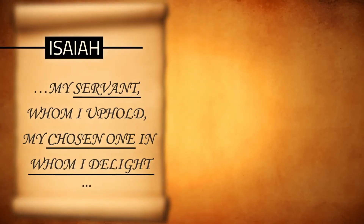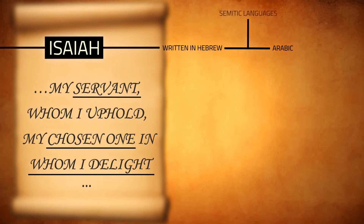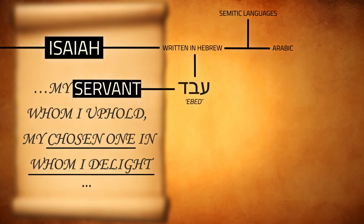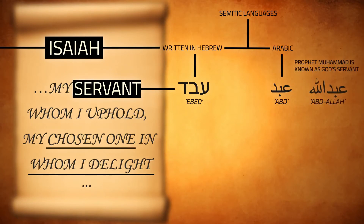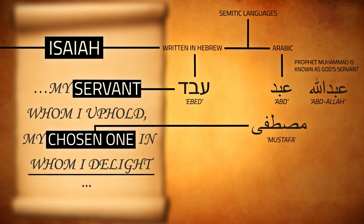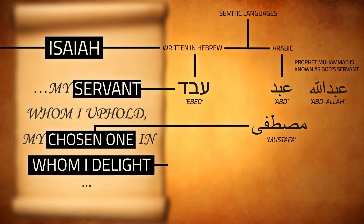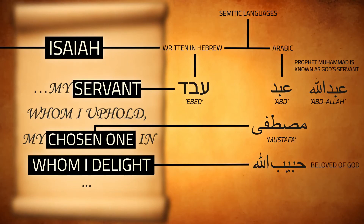Isaiah is originally written in Hebrew. Arabic and Hebrew share a lot of common words because they are both Semitic languages. Isaiah uses the Hebrew word 'Ebed' for servant. The Arabic word for servant is 'Abd.' Prophet Muhammad is known as God's servant — in Arabic, Abdullah. 'Chosen one' is Mustafa in Arabic, another of the Prophet's names. 'The one in whom God delights' shows that this person is beloved to God — Habibullah in Arabic, which means beloved of God, also happens to be one of the Prophet Muhammad's names.